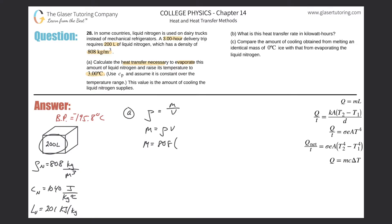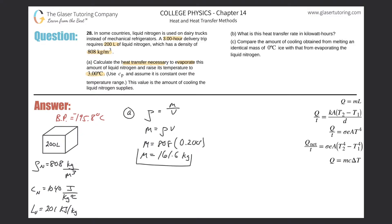The volume was given in liters, so we need to convert to cubic meters for consistent units — divide by 1000 to get 0.200 m³. Multiplying 808 times 0.200 gives us 161.6 kg. That's the mass of the liquid nitrogen.